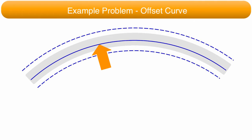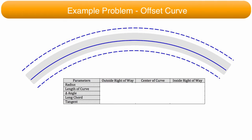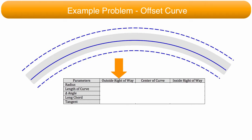To keep track of the information, a table is used. Along the left side of the table is a column listing the parameters of the horizontal curve. The columns of the table are labeled: parameters, outside right-of-way boundary, center of the curve, and inside right-of-way boundary.